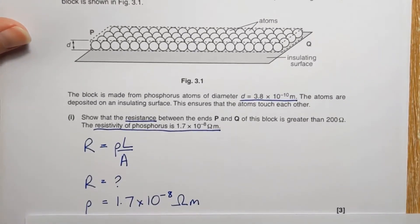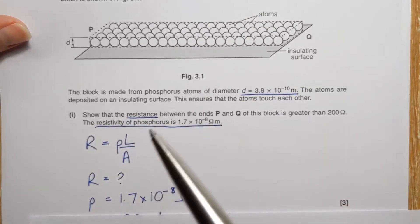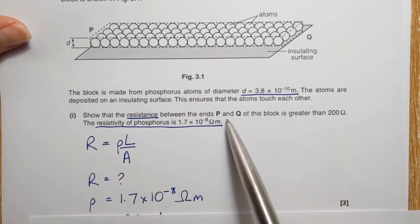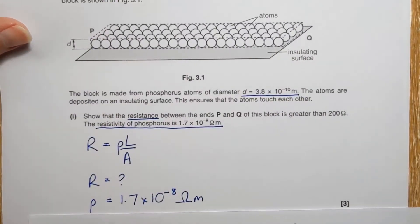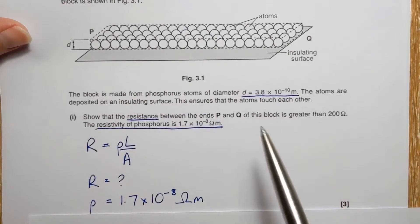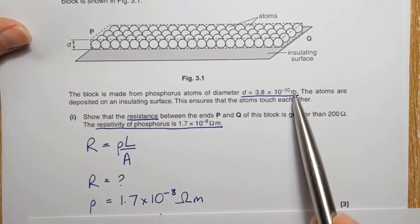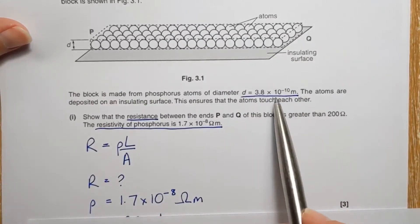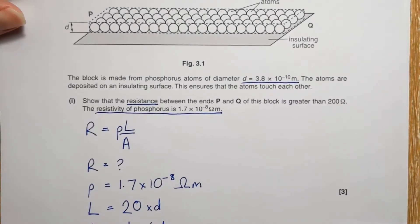So next up, we need the length. If we look at our diagram there, we're being asked to find the resistance between the ends P and Q. Between here and here, that's the length we want. And we're told that it's 20 atoms. So 20 atoms long and each one atom is that much across. So we've got 20 times D will be the length.